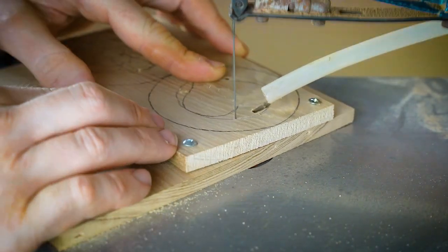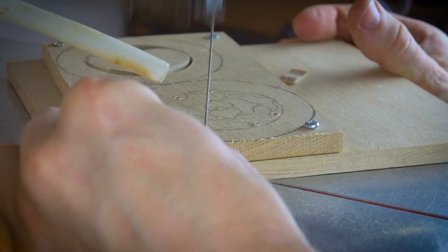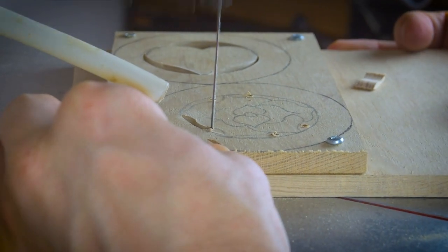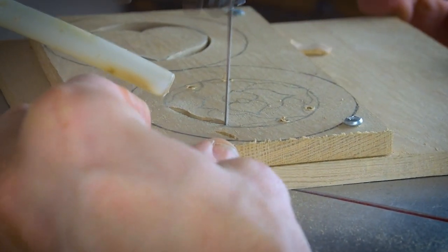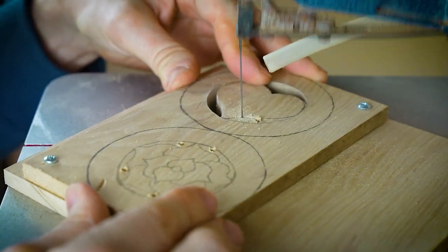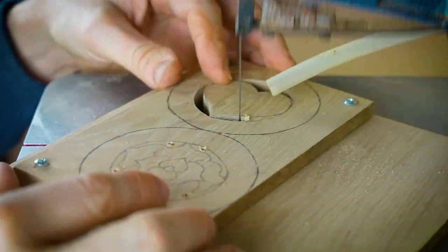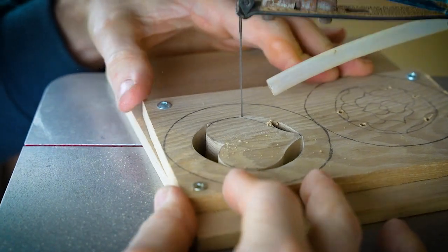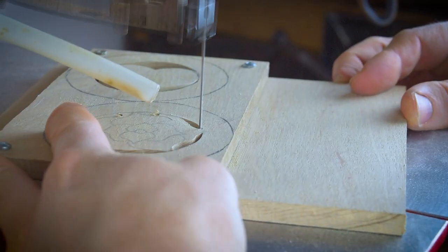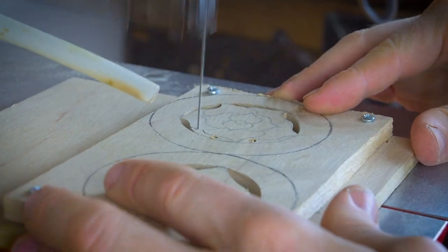When you go on to using the scroll saw, I would actually suggest doing your scroll saw work in a specific order. I would do the pierce work first. The reason for this is because you have those two pieces of wood stuck together, you're keeping them stuck together whilst you do your pierce work so you're making both at the same time.